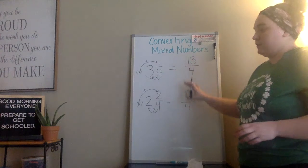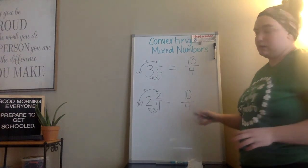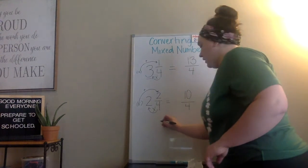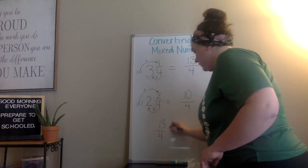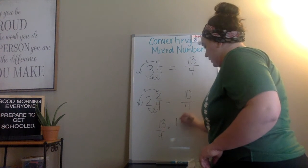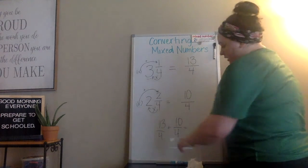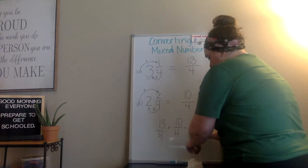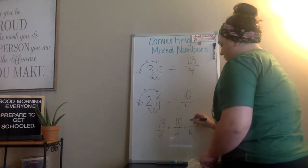So you can convert them on your review packet. You have these two numbers and they're wanting to find them added together. If I added them together I could do 13 fourths plus 10 fourths. My bottom stays the same because I have a common denominator. 13 plus 10 is 23.